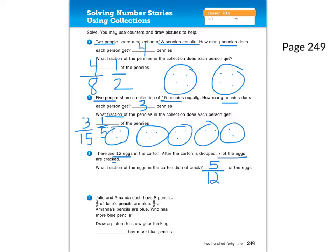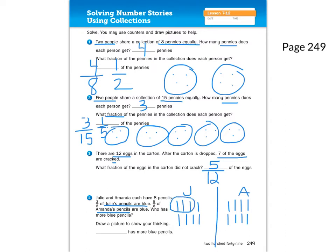The last one: Julie and Amanda each have eight pencils. Three-eighths of Julie's pencils are blue, and five-eighths of Amanda's pencils are blue. Who has more blue pencils? Draw a picture to show your thinking. I'll draw eight pencils for each of them, then circle three for Julie's blue ones and five for Amanda's. Who has more blue pencils? The correct answer is Amanda.